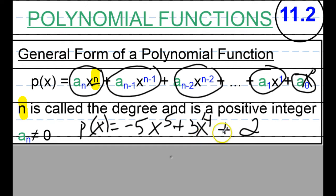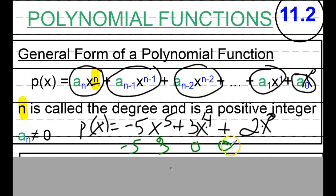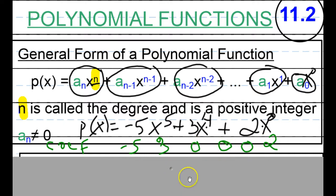Because we have some constants here in between x to the fourth and x to the zero. Remember, this last term is x to the zero. So in this case, the constants — which we're going to rename coefficients — really go in order: we have negative 5, we have 3, but then we have zero for the x cubed term, zero for the x squared term, zero for the x to the one term, and then the last term is 2. So our coefficients are: negative 5, 3, 0, 0, 0, 2.